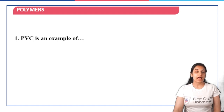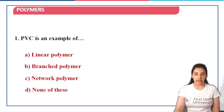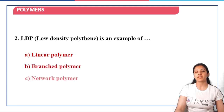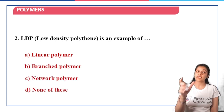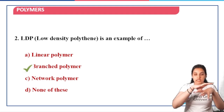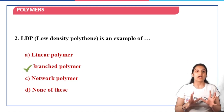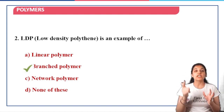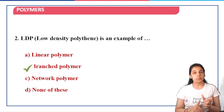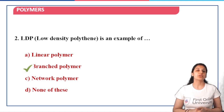Now based on this, let's quickly look at a few MCQs. PVC is an example of — linear polymer, branched polymer, network, or none of these? We have seen polyvinyl chloride is an example of a linear polymer, so option A is the correct answer. Next question: LDP (low-density polythene) is an example of — linear, branched, network, or none of these? Since LDP has low density, it is the branched polymer. Branched polymers have low density because the mass is spread over a larger volume, increasing the denominator in the density formula (mass/volume), so density decreases. Therefore, low-density polythene is an example of a branched polymer — option B is the correct answer.